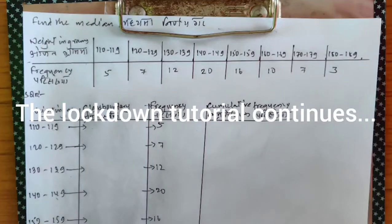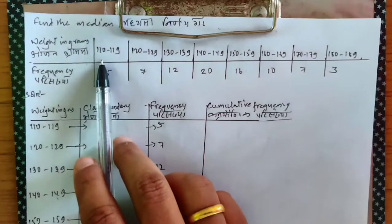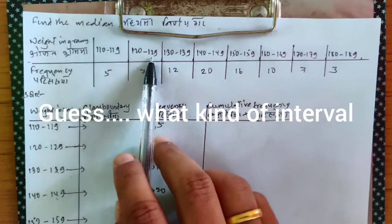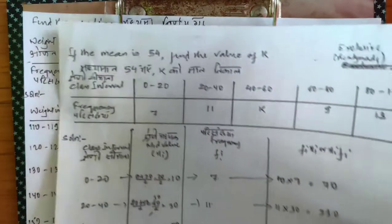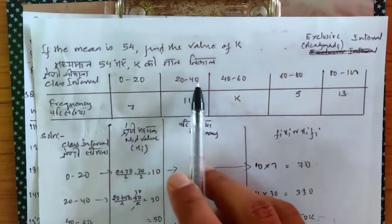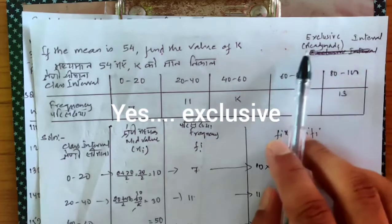Welcome back to another tutorial. Today we'll be doing the remaining part of median. I want to look at the interval 110 to 119, and it starts from 120 to 129. I can see many of you are confused about when an interval is exclusive or inclusive. Here's one example: 0 to 20, starts from 20 to 40, ends in 40 and starts from 40 to 60. This is an exclusive interval.